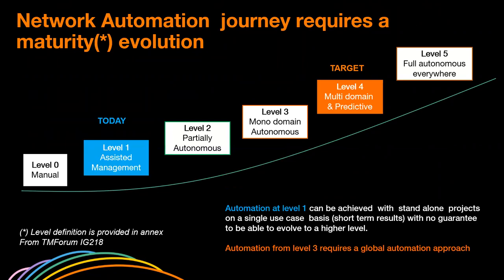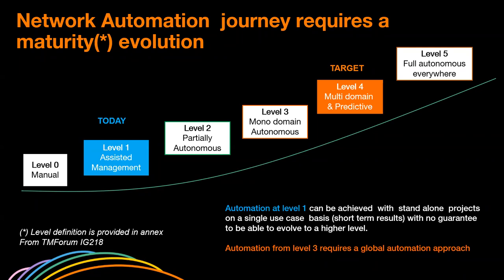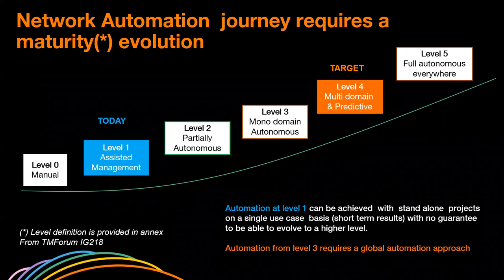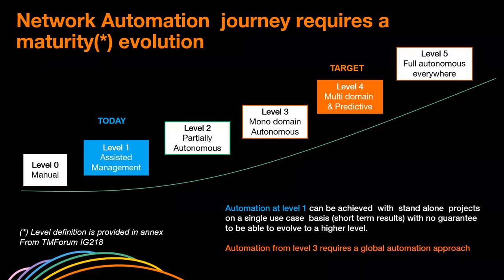Network automation is a long journey, and we must take into account where we are today and where we want to go tomorrow. We have a maturity evolution scale based on six levels, inherited from TM Forum works. Level zero is everything done manually — the legacy system. Level five is a global automation system fully aware of all networking domains, implemented everywhere — a long-term target we may never fully reach. What's interesting is to focus on the intermediate levels.